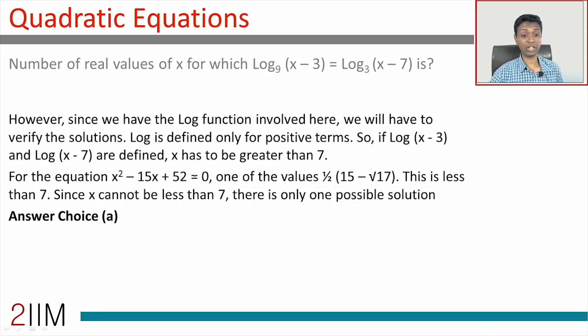For x² - 15x + 52 = 0, remember that log (x - 3) should be defined and log (x - 7) should be defined. If you're solving x² - 15x + 52 = 0, we'll get two real solutions of x, but we must consider only real solutions of x that are greater than 7.